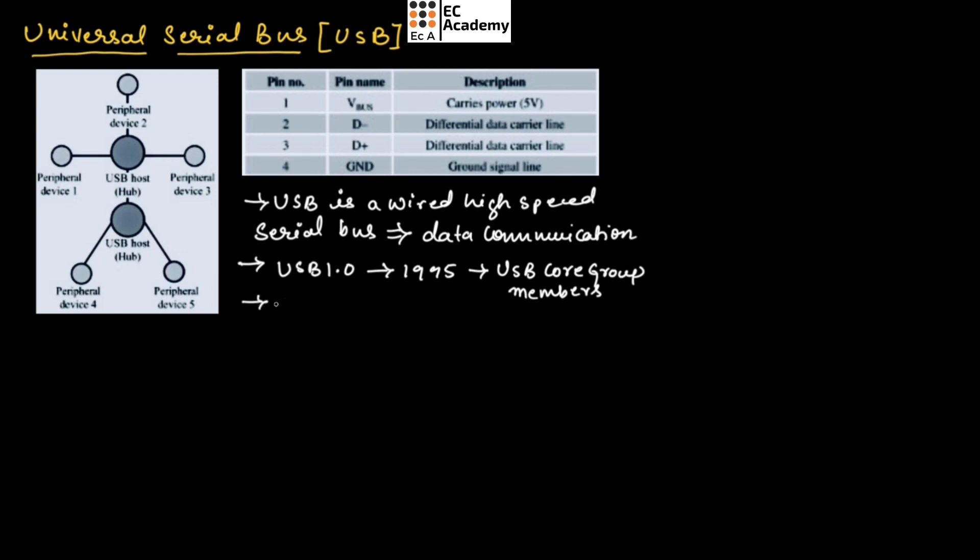The USB communication system follows star topology. As you can see in this figure, the star topology consists of a USB host which is at the center, and also it consists of USB peripheral devices to which the USB host is connected.